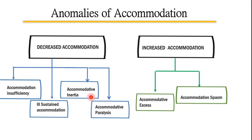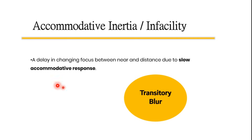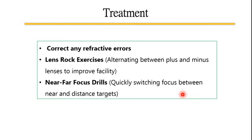The third anomaly is accommodative inertia, also known as accommodative infacility. The patient has a delay in changing focus between near and distance due to a slow accommodative response, experiencing transitory blur as they shift focus from a near to a far object or vice versa. Treatment involves correcting any refractive errors and prescribing accommodative facility improving exercises.